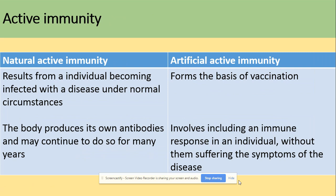We can further divide active immunity into natural and artificial active immunity. Natural active immunity is the effect from a person becoming infected with a disease under normal conditions — they produce their own antibodies and may continue to do so for many years. Artificial active immunity comes from vaccination, involving inducing an immune response in a person without them suffering any symptoms of that specific disease.